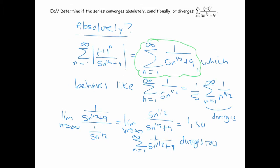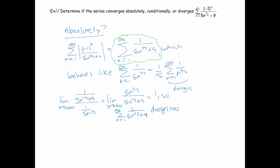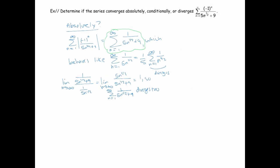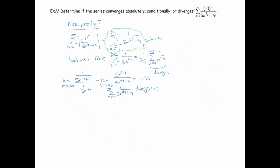So it diverged, but that just means — if you look back — that our alternating series does not converge absolutely. So we check to see if it converges conditionally.